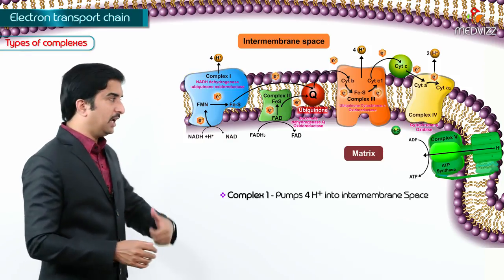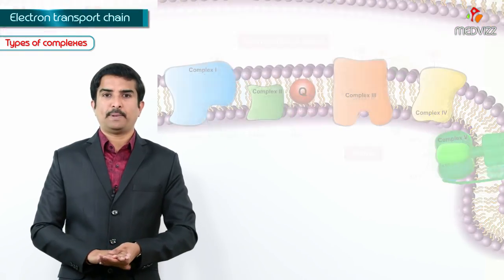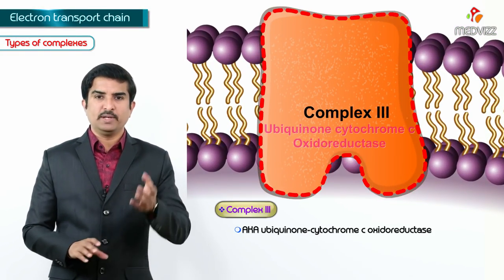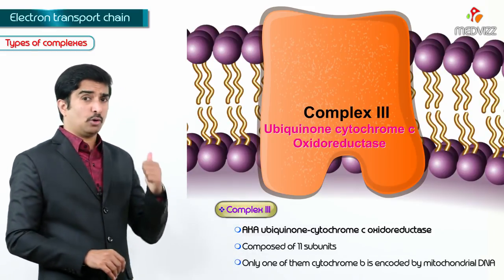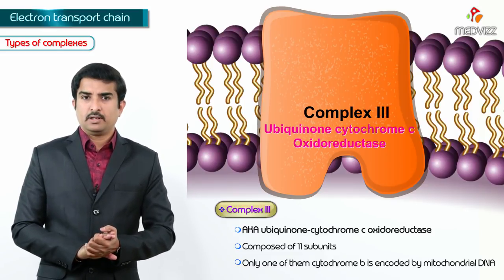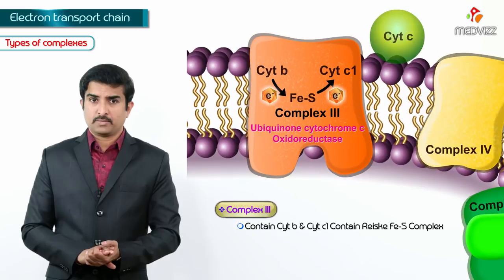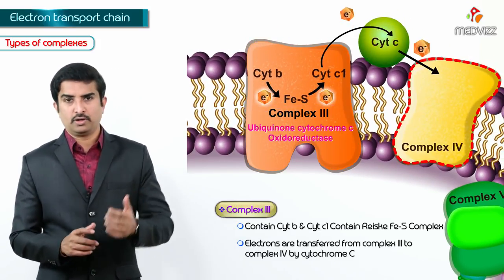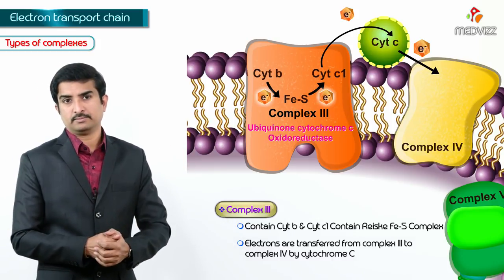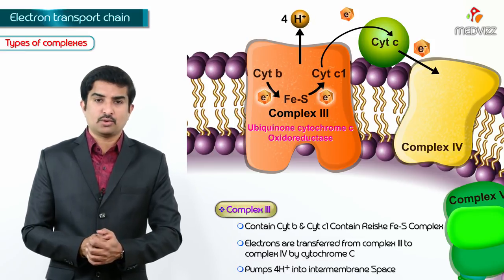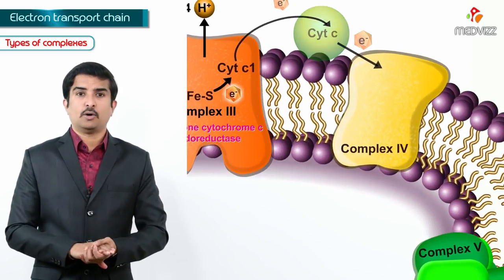Complex 1 pumps 4 hydrogen ions into the intermembrane space, while complex 2 pumps 0. Complex 3, also called ubiquinone cytochrome C oxidoreductase, is composed of 11 subunits — only cytochrome B is encoded by mitochondrial DNA. It contains cytochrome B, cytochrome C1, and an FES complex. Electrons are transferred from complex 3 to complex 4 via cytochrome C, and complex 3 pumps 4 hydrogen ions into the intermembrane space.